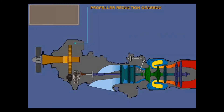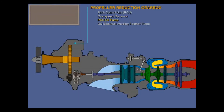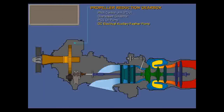On the prop reduction gearbox are the pitch control unit, PCU; the overspeed governor; the PCU oil pump; and the DC electrical auxiliary feather pump. The feather pump is not driven by the gearbox. The pitch control unit, PCU, controls the propeller blade angle and speed. The overspeed governor protects the propeller from speeds over approximately 1170 RPM. The PCU oil pump increases the engine oil pressure before the oil enters the propeller system, and the DC auxiliary feather pump provides a backup means of manually feathering or unfeathering a prop, if condition lever selections fail.